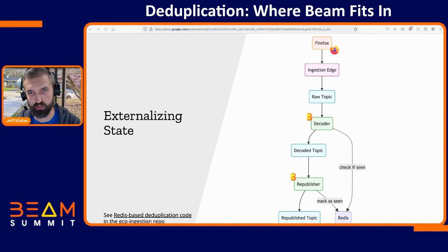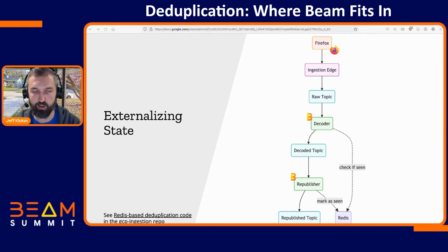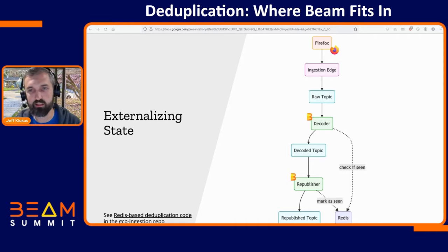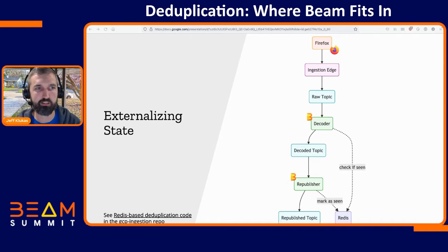So the republisher reads this topic anyway as part of what it's doing, and the first thing it does is mark the message as seen in Redis. Then if a duplicate of that message hits the decoder, it'll check Redis, see it's already been seen, and safely throw away that message.